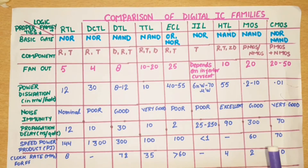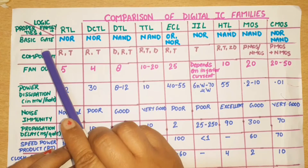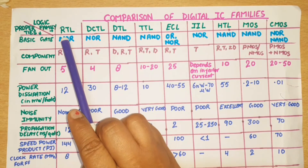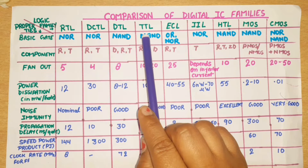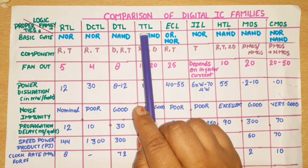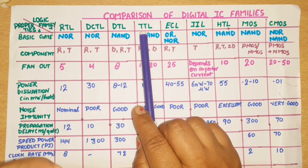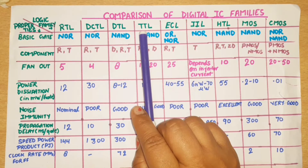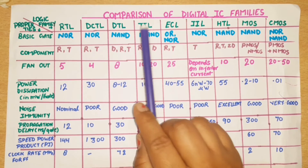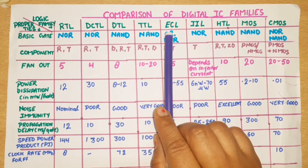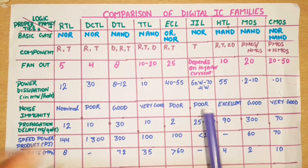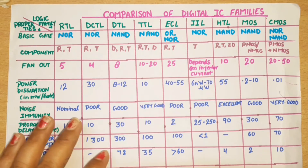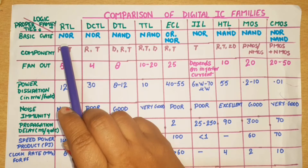RTL works in non-saturated design. DCTL works in saturation. DTL works in saturation. TTL — the three types, totem pole, open collector, and tri-state — all work in saturation. ECL is also a non-saturated logic family. MOS and CMOS are also non-saturated logic families.